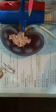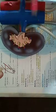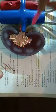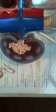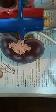Medially, on the right side, the ureter is related to the inferior vena cava. On the left side, medially there is the left gonadal vein and further medially the inferior mesenteric vein, which lies medial to the gonadal vein.